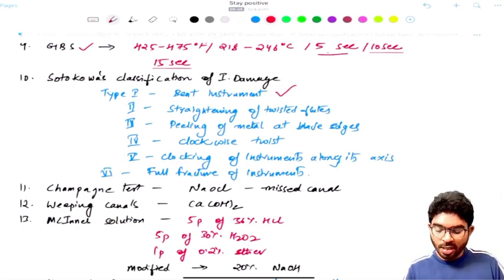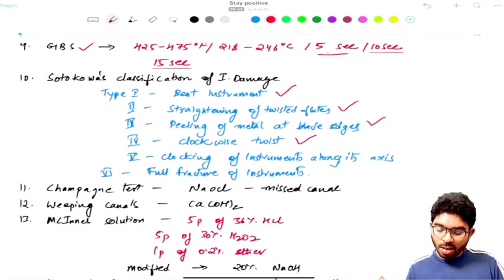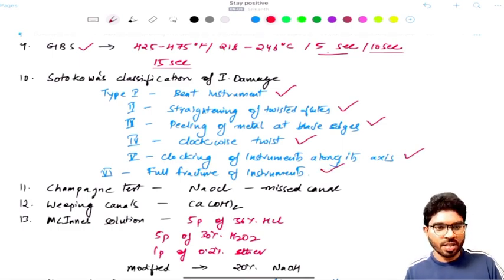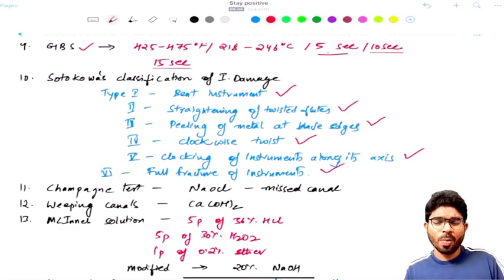Whenever there is a bend in the instrument, that is class 1. Class 2 is straightening of the twisted flutes. Normally, flutes will be twisted. So whenever the twisted flutes are being straight, that is class 2. Peeling of the metal at the blade edges is class 3. Clockwise twist is called as class 4. And locking of the instrument along its long axis is called as class 5. And full fracture of the instrument, complete fracture of the instrument is called as class 6. And do make a note - this is something new, but you can go back and check your PP books.